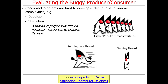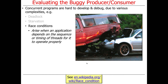Another problem is starvation — that occurs if a thread is perpetually denied the resources it needs to get its job done. You might have a bunch of threads where some are high-priority, and there's some poor thread that doesn't have the same priority, so it never gets a chance to run and it starves. Race conditions — we've talked about those before — occur when the proper behavior of a program depends on the timing or the order in which the threads run.